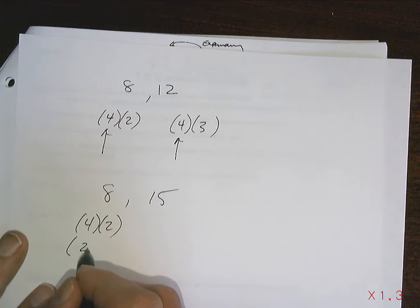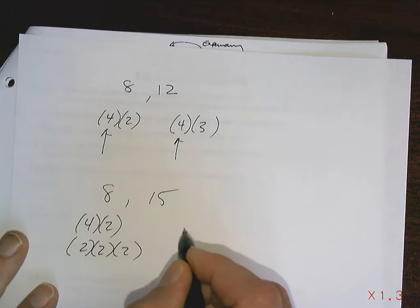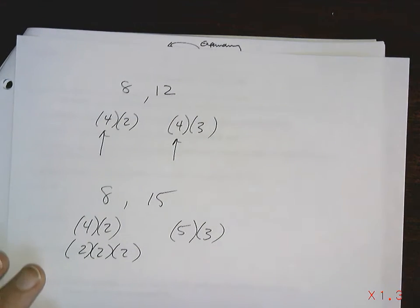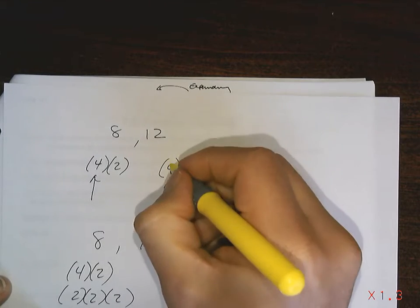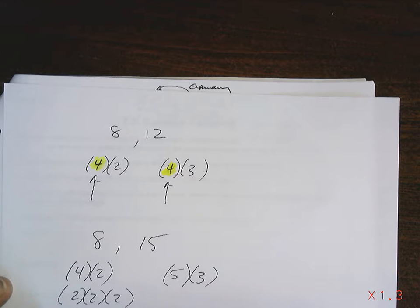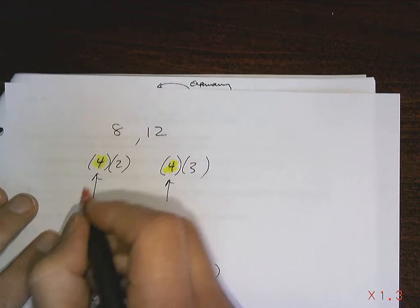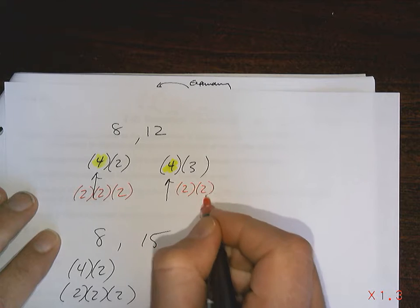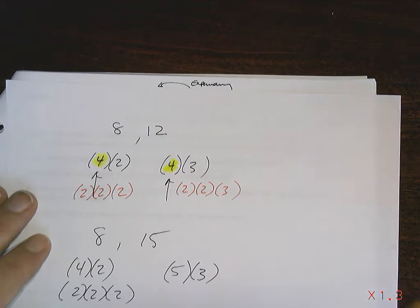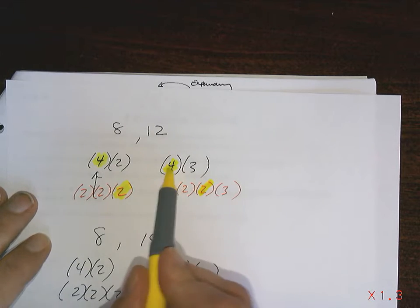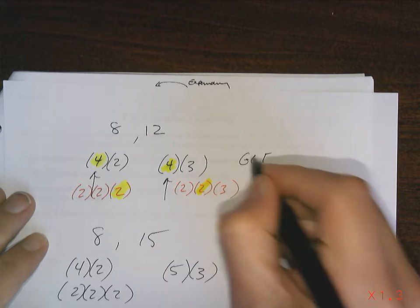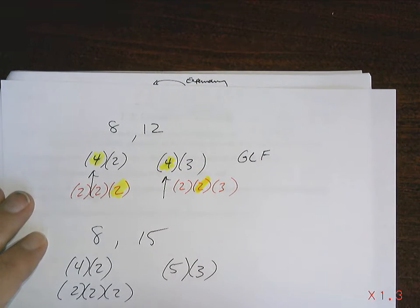Sometimes numbers don't have a common factor — like 8 and 15. 8 breaks down into 2 times 2 times 2, and 15 into 5 times 3; they share nothing. Going back to 8 and 12: 8 is also 2 times 2 times 2, and 12 is 2 times 2 times 3, so they also share a common factor of 2 — but 4 is larger, so 4 is the GCF.